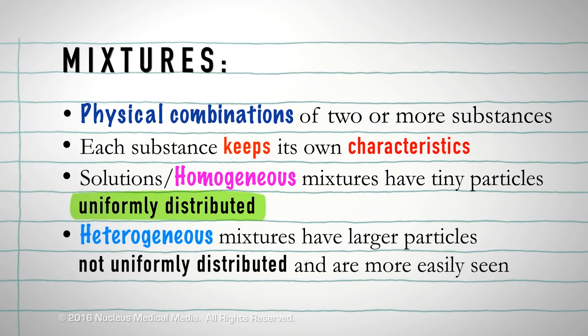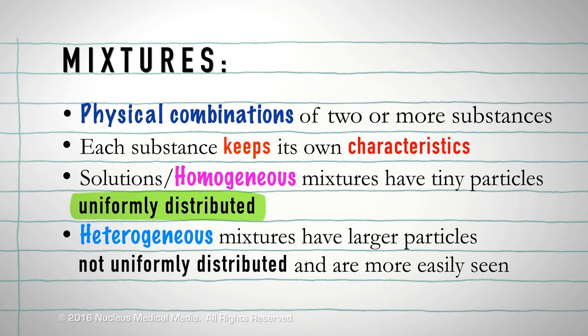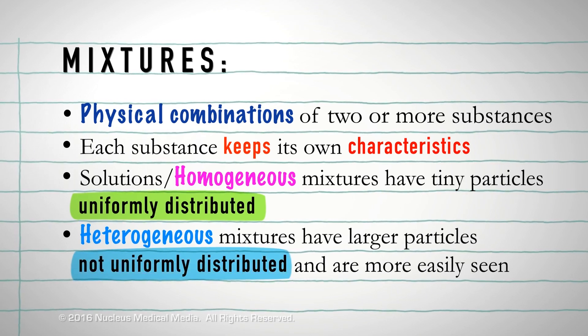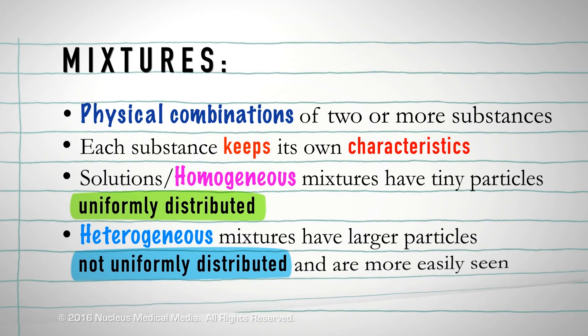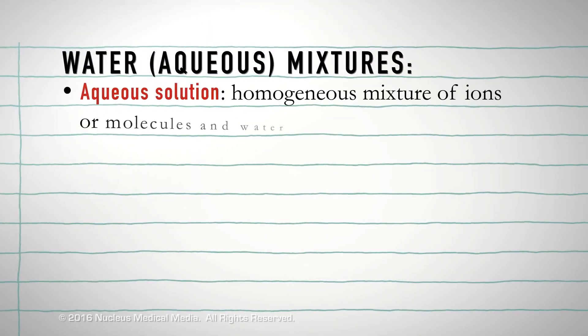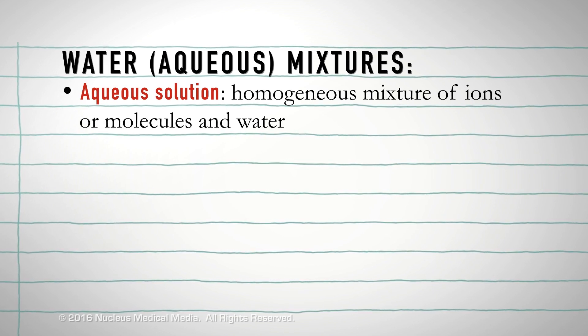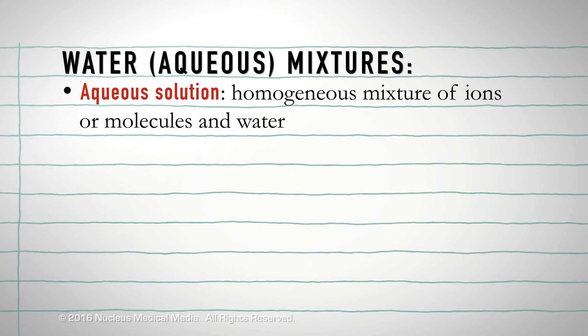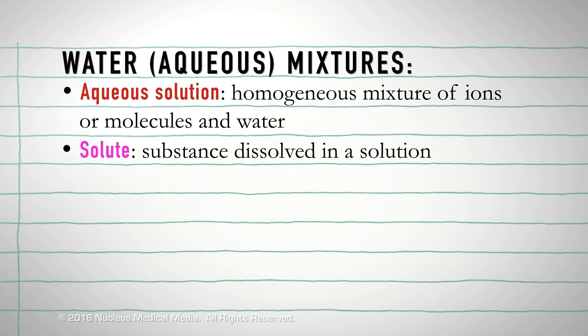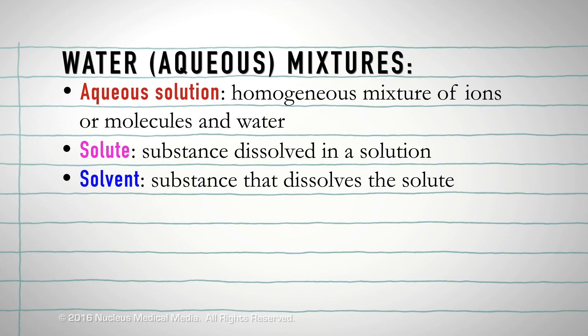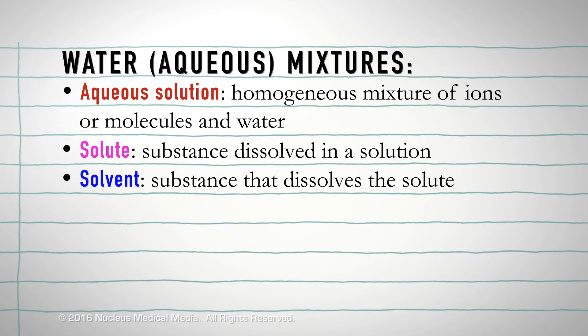Or a mixture may be heterogeneous with larger particles that are not uniformly distributed and are more easily seen. Aqueous solutions are homogeneous water-based mixtures consisting of tiny ions or molecules dissolved in water. A solute is the dissolved substance in a solution. A solvent is the substance that dissolves the solute.